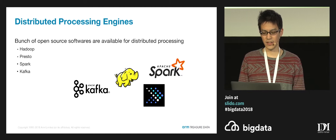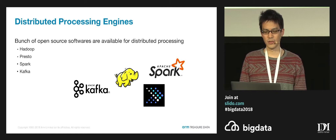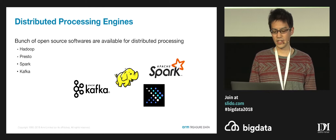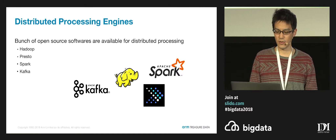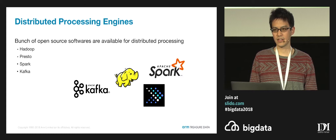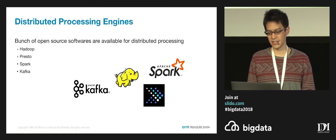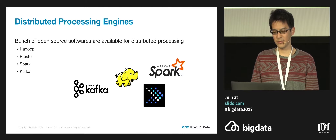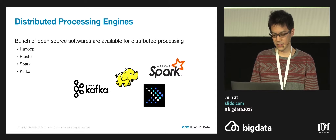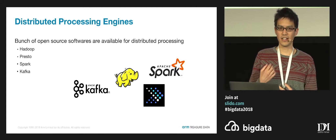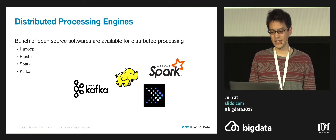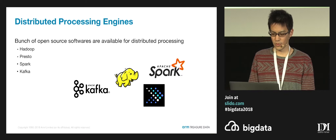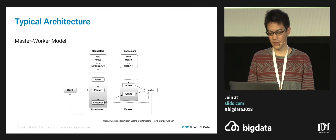Fortunately, there are a bunch of open source software available for distributed processing. Apache Hadoop is the most famous one, born over 10 years ago and still one of the most active projects in the big data analysis field. Apache Spark and Presto are a kind of Hadoop, but their processing is completely in-memory, so it can be much faster. And Kafka is a little bit different — it is a queuing system in a distributed manner.